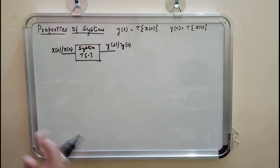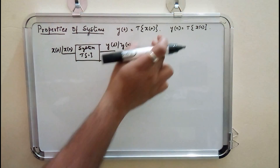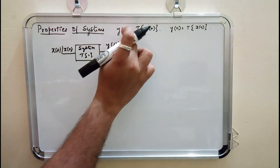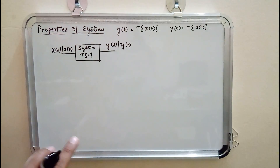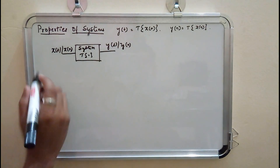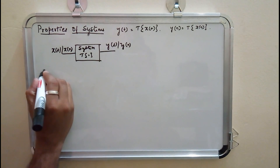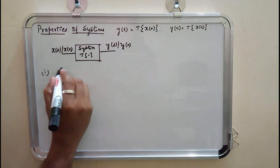We have different properties of the system based on the input and output relationship. The first one is linearity.